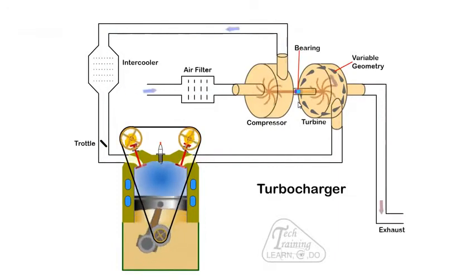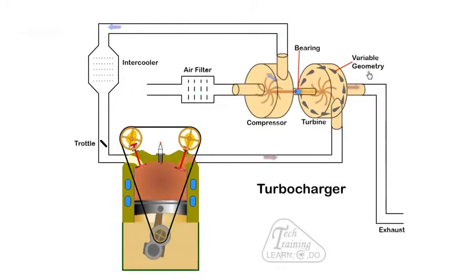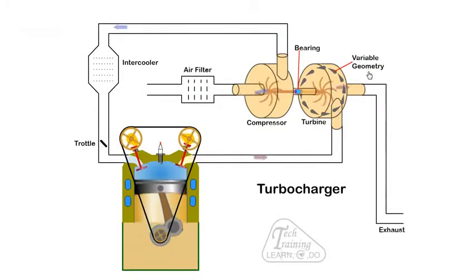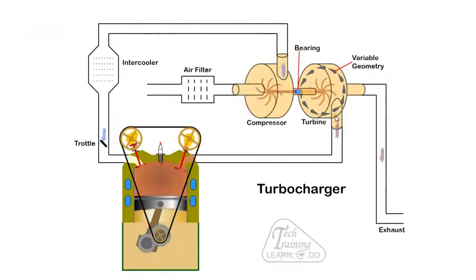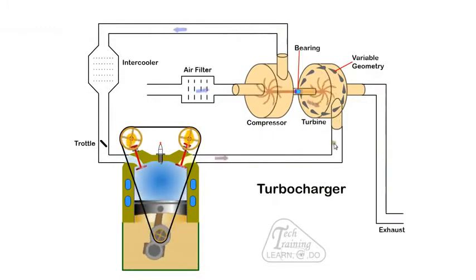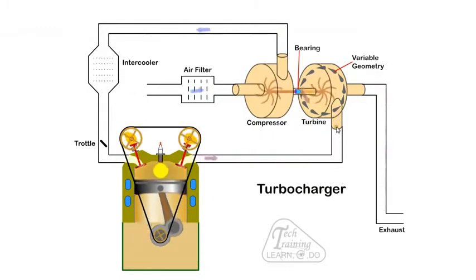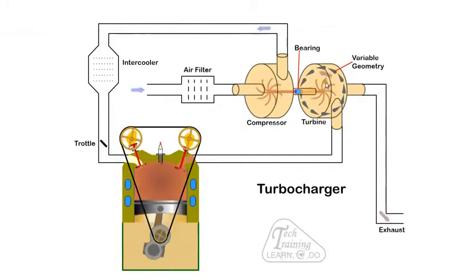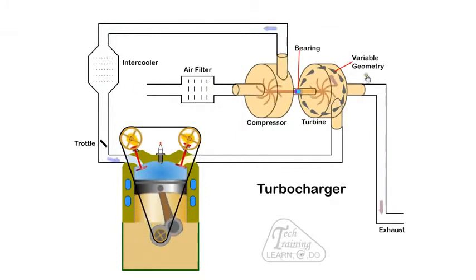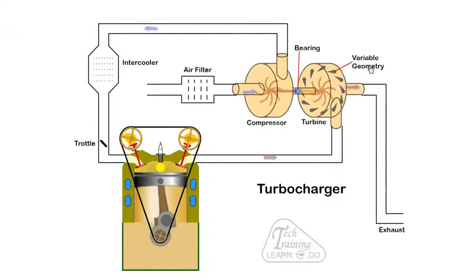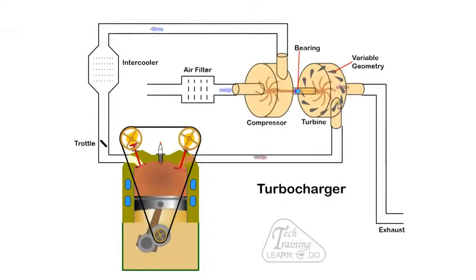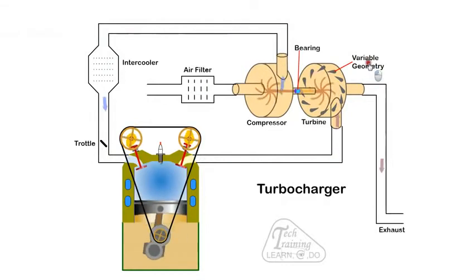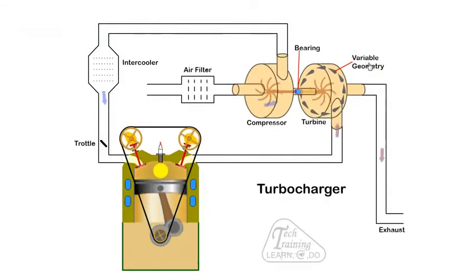As we require constant boost pressure from the turbo, it is common to use a variable geometry turbine. The vane angle can be adjusted depending on exhaust gas flow. At low gas flow the vanes are in the closed position. As the gas moves through the small gap between the vanes its velocity increases, thus increasing the turbine speed. At high exhaust gas flow the vanes are opened, thus reducing gas velocity.